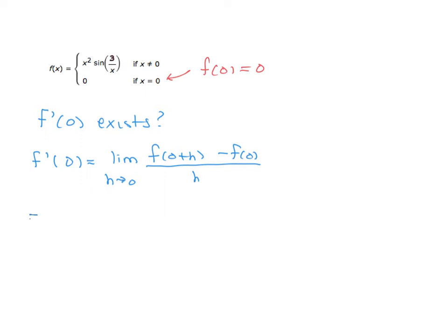This is the limit as h goes to 0 of... we're dividing by h. I'm not going to put anything because this is 0. And f of h is h squared over 3 divided by h. The reason is h is not equal to 0, therefore we're using this part of the definition. So we have h squared times sine of 3 over h.